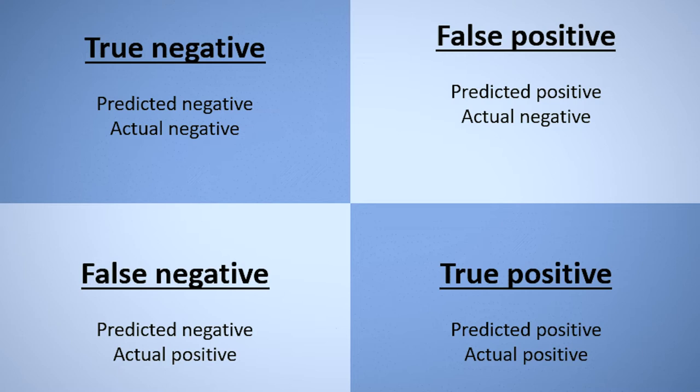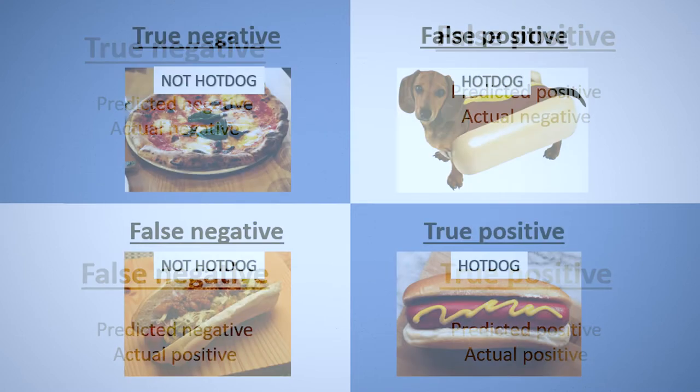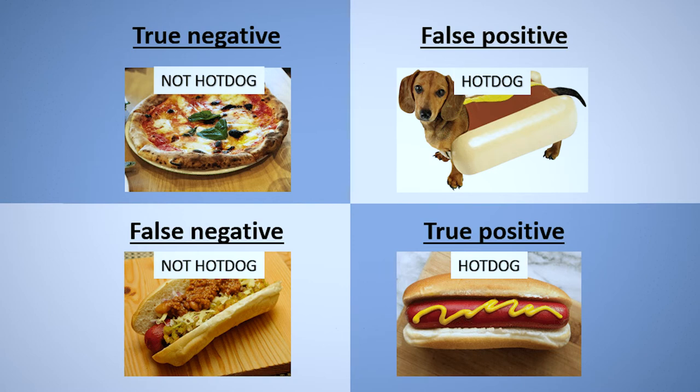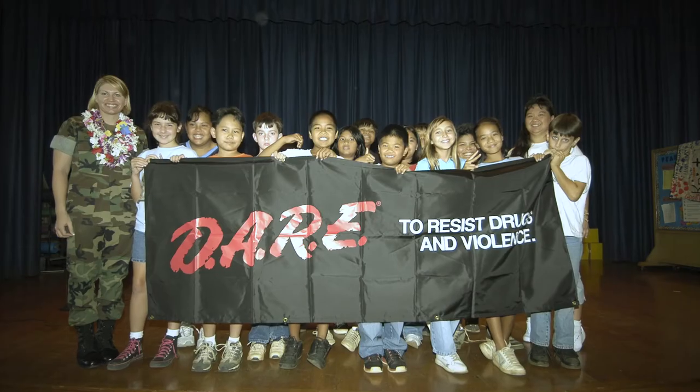Firstly, identifying false positives is crucial in determining whether an idea is scalable or not. A false positive occurs when you interpret some piece of evidence or data as proof that something is true when in fact it isn't. It is the illusion of knowledge arising from either misleading data, hidden biases, or outright deception.